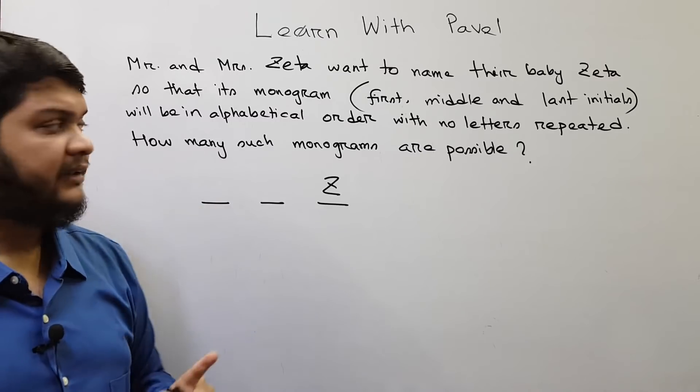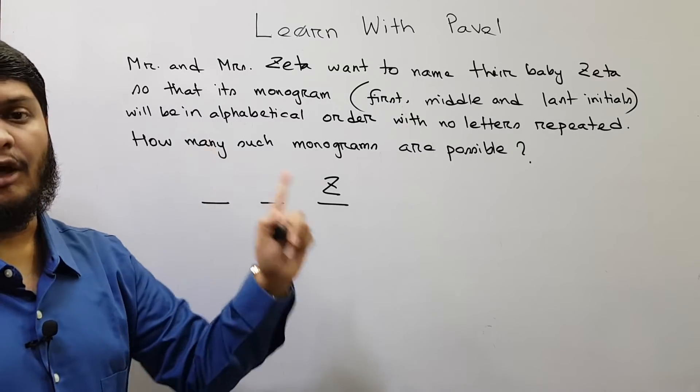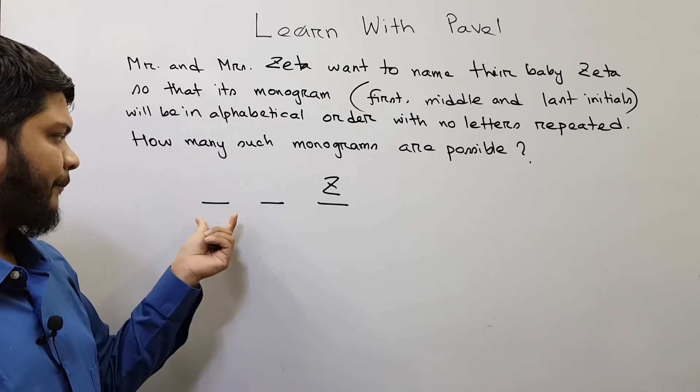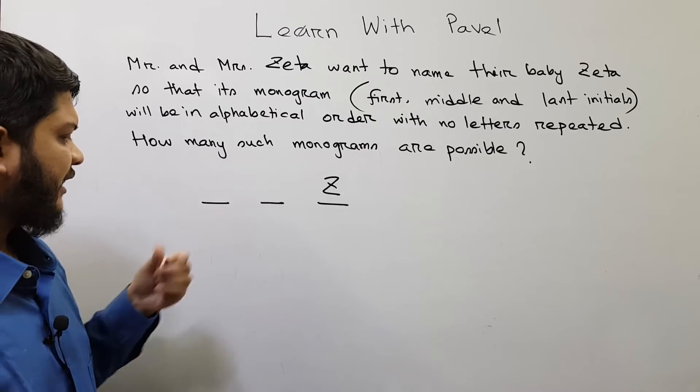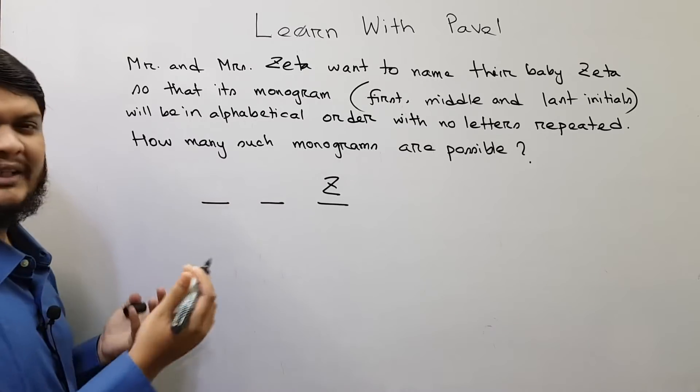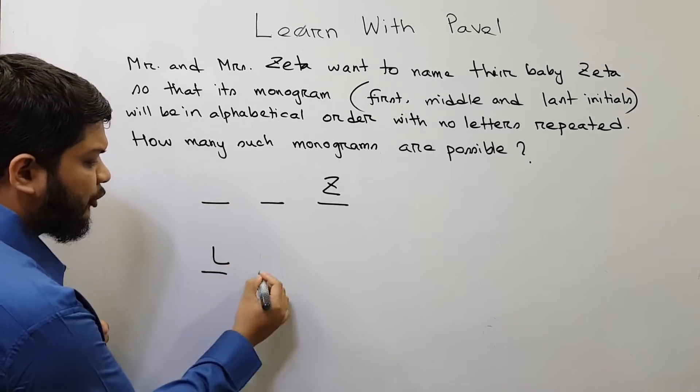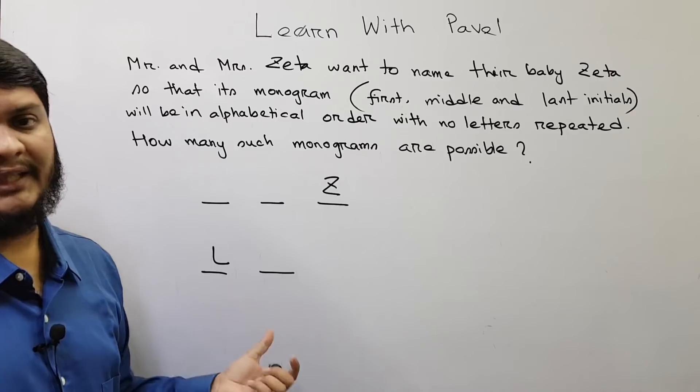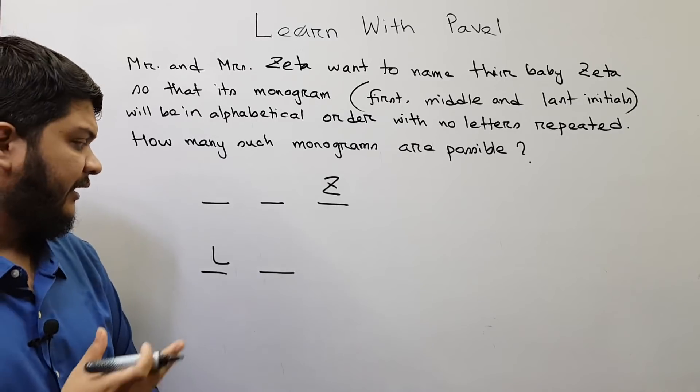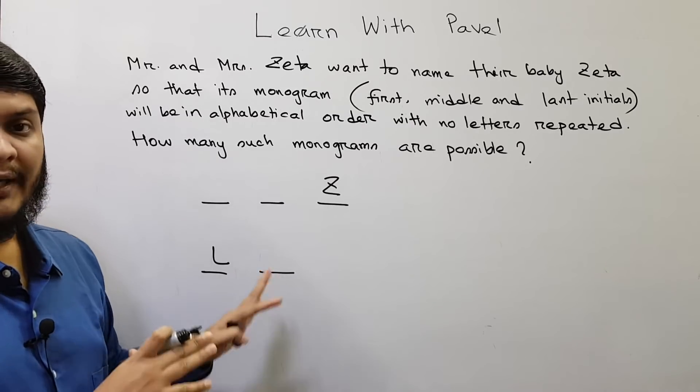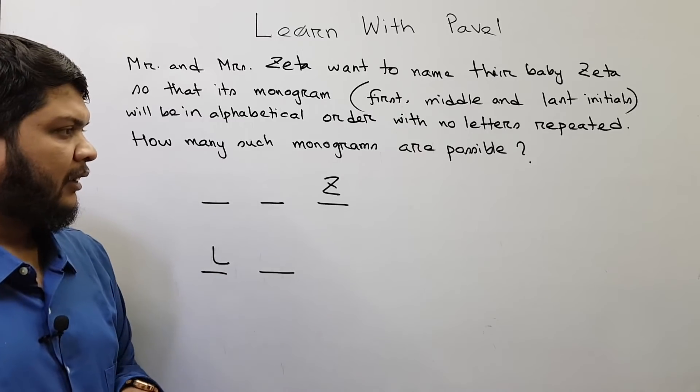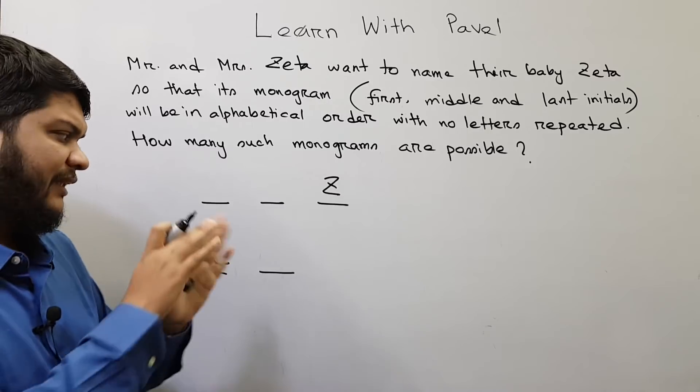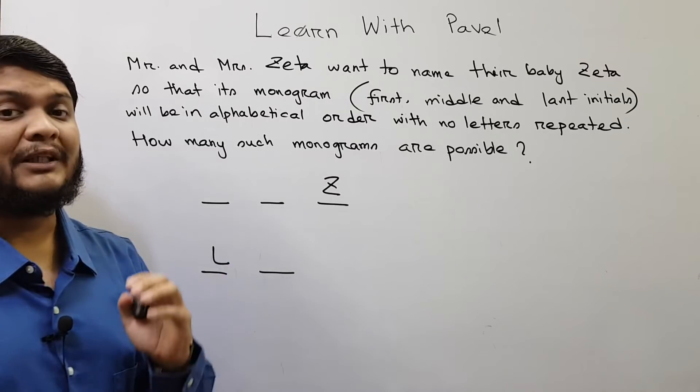But we have to remember that it should be in alphabetical order. What does it mean? It means that if you write this name with something like L, then you cannot put here any letter that comes before L, that is A, B, C, D, E, F, G, H, I, J, K. So you cannot put any of these letters here. So how can we find out the number of arrangements? If you think like this way it would be much more complicated.